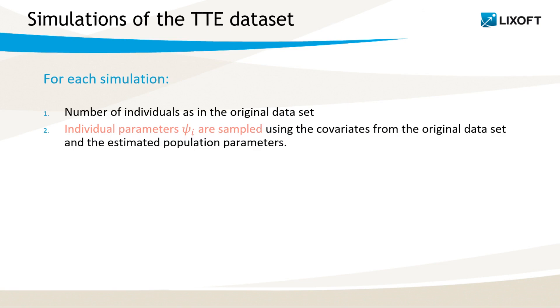Let's see how it works in detail. First, we have to simulate a dataset, keeping the same design as in the original dataset. We keep the same number of individuals and we sample individual parameters using covariates from the original dataset. Population parameters are those estimated in Monolix.